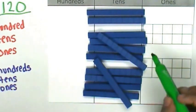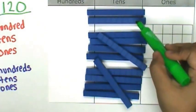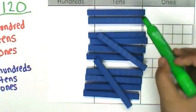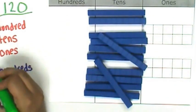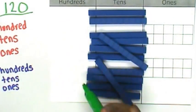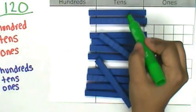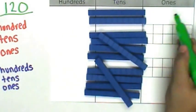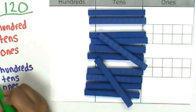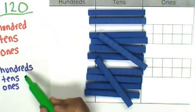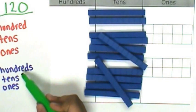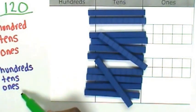So now we have 100, 10, 120. So we have zero hundreds, 10, 11, 12 tens and zero ones. 120 is composed of zero hundreds, 12 tens and zero ones.